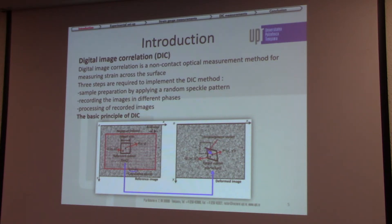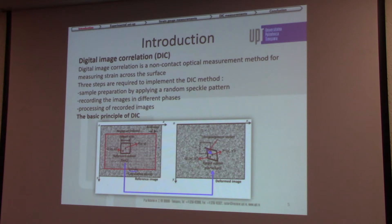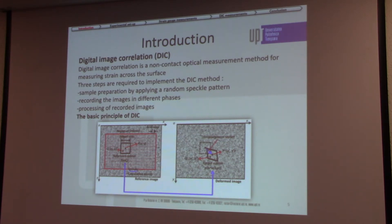Digital Image Correlation is a non-contact optical measurement method for measuring strain across the surface, allowing strain measurement over the entire surface of the part. Three steps are required: first, preparation of the sample by applying a random speckle pattern, which is important for good quality and reduced noise; second, recording images at different phases of loading; and third, processing the recorded images. The image is split into subsets and the displacement of points is tracked relative to the undeformed image.